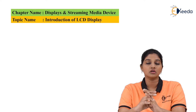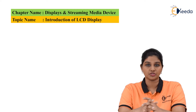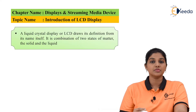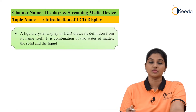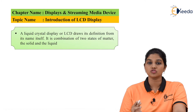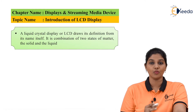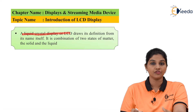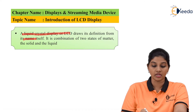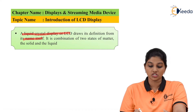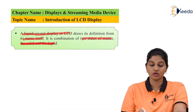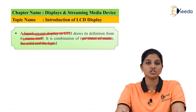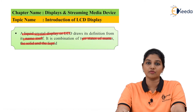The term LCD stands for liquid crystal display. LCD basically draws its definition from its name itself — it consists of two materials, that is liquid and crystal. It is a combination of two states of matter, that is solid and liquid, indicating both the solid state and liquid state.